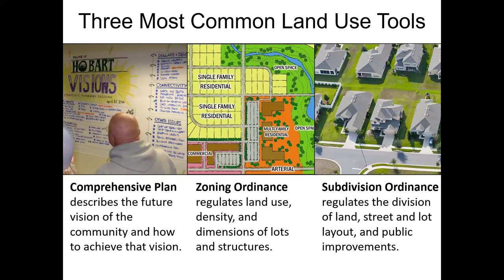At a high level, the comprehensive plan is a future-oriented document. It describes where you want to go, what your future vision is, and how you're going to get there — how you're going to implement that vision. The zoning ordinance and subdivision ordinance are both regulatory tools. Zoning regulates land uses, density, dimensions of lots and structures, and so forth. Zoning is actually for some communities used on a more frequent day-to-day basis because it can apply to new as well as existing development. It's really concerned about how land uses interact within your community and how you're making sure they're compatible.